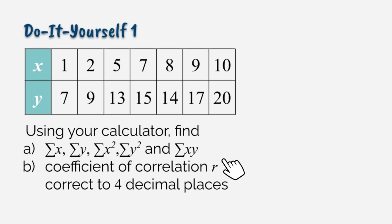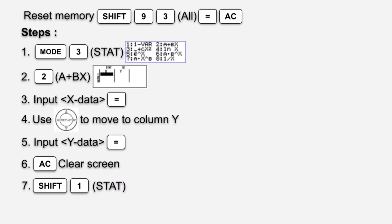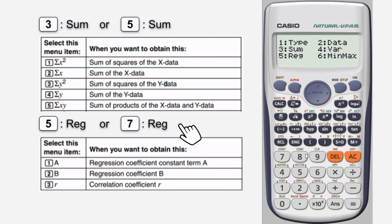Now let's answer question B: find coefficient of correlation r, correct to four decimal places. Press SHIFT 1 once again, then press 5 or 7 depending on the variance of your calculator.